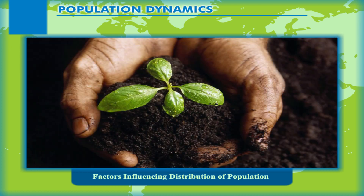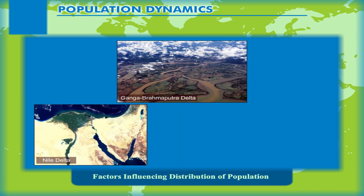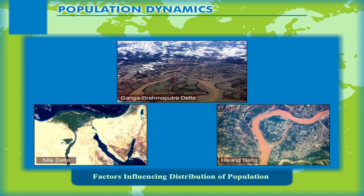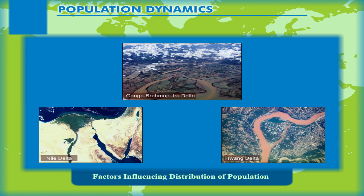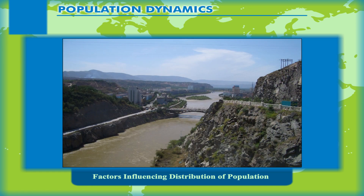Fertility of soil is another important factor, as fertile soils are the support base for agriculture. The Ganga-Brahmaputra Delta, Nile Delta in Egypt, and Huanghe in China always attract large human settlements. This is the reason why river valleys are called the cradles of human civilization.